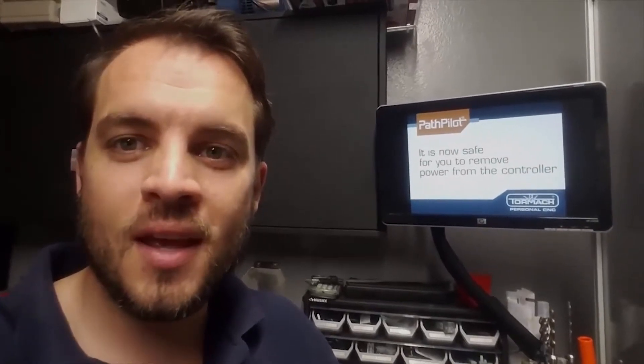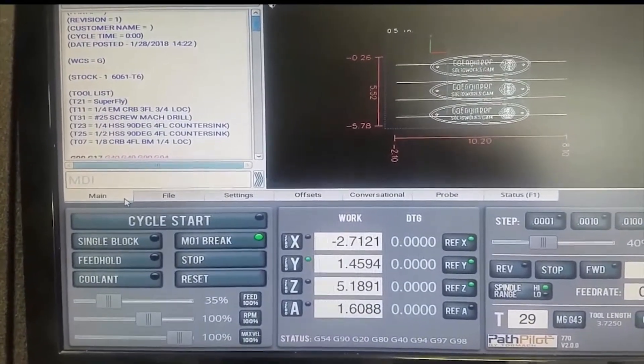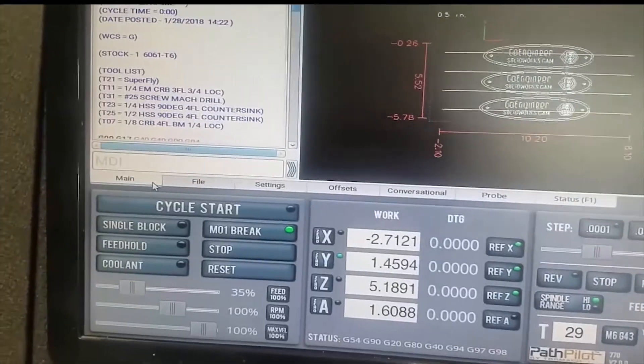Hello, my name is Adam Hughes and thank you for joining us on this next session of How It's Made. Today we're going to talk about how we can load our post-processed G-code into PathPilot and then also how to measure our tool offsets. Let's take a look.